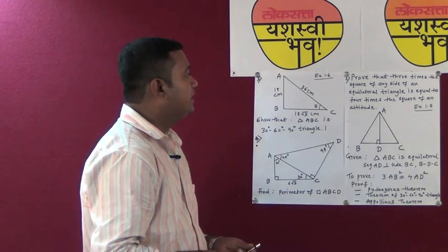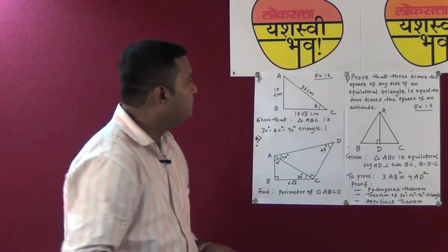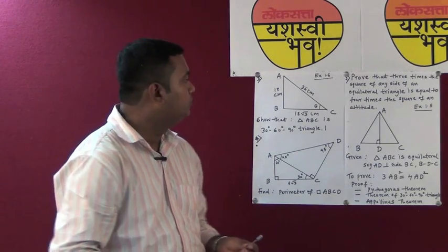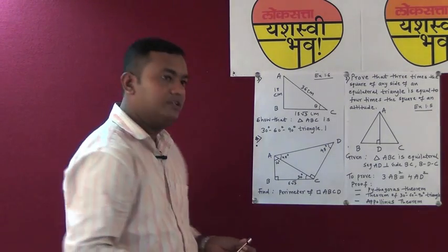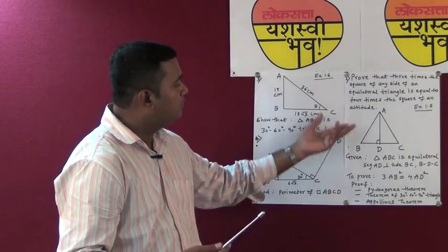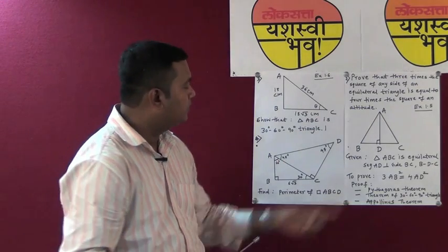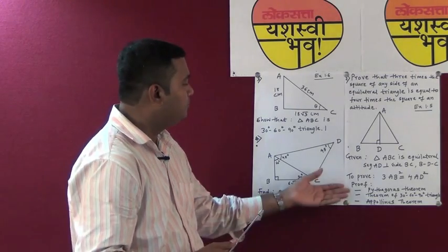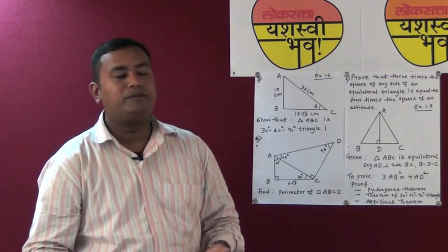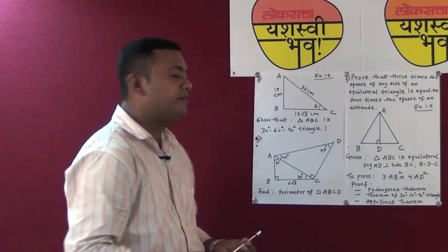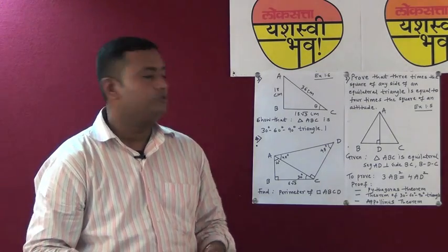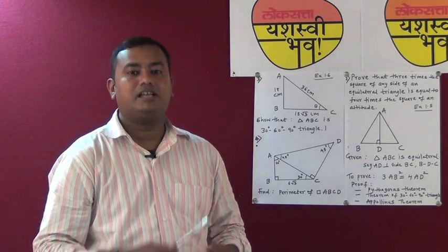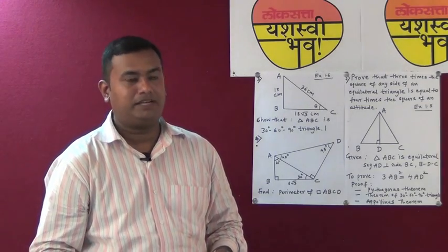One more example in the textbook in exercise 1.5 says: prove that 3 times the square of any side of an equilateral triangle is equal to 4 times the square of an altitude. In such proofs, you first draw a diagram and from the diagram write 'given' and then 'to prove.' There are various methods: you can prove it by the Pythagoras theorem, the Apollonius theorem, or the 30-60-90 triangle theorem. Whichever method you find easy and comfortable, you can use.